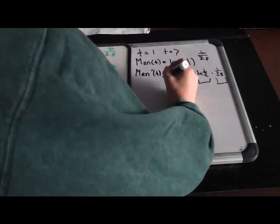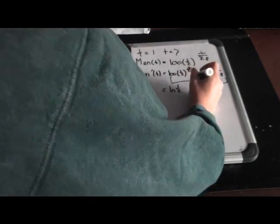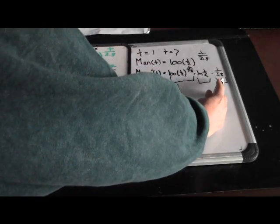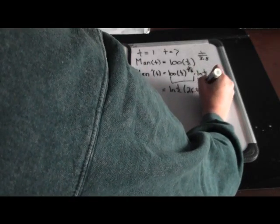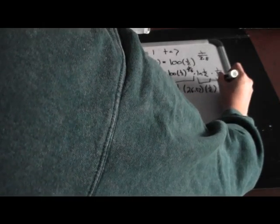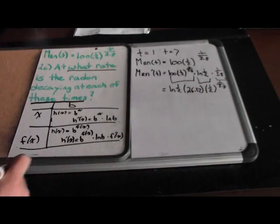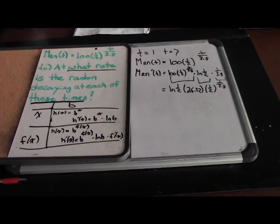Simplifying and rearranging into correct form: mRn′(t) = ln(1/2) × 26.32 × (1/2)^(t/3.8), where 26.32 comes from multiplying 100 × (1/3.8). Make sure you do not multiply the base 1/2 by anything else — your base value should always remain constant.